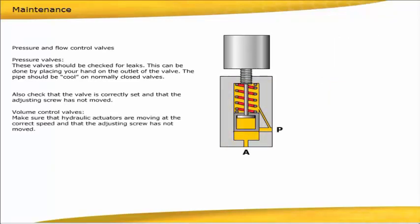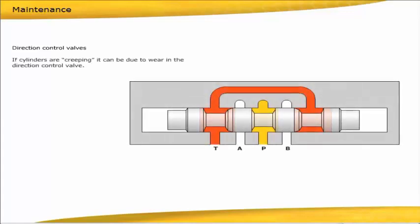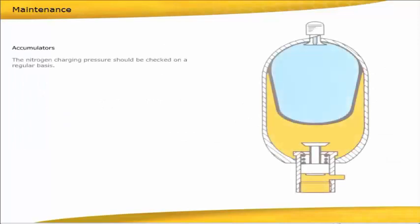Volume control valves: Make sure that hydraulic actuators are moving at the correct speed and that the adjusting screw has not moved. Direction control valves: If cylinders are creeping, it can be due to wear in the direction control valve. Accumulators: The nitrogen charging pressure should be checked on a regular basis. Always use nitrogen when charging accumulators.